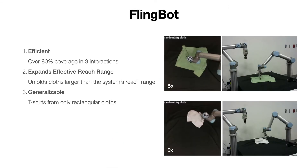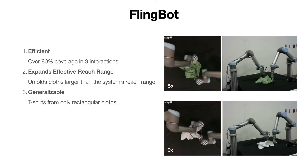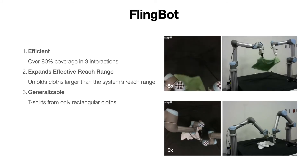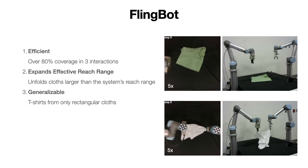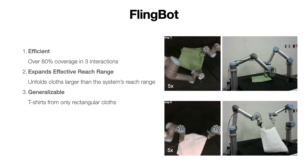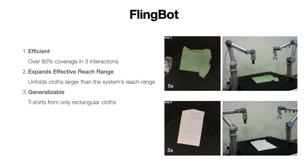We introduce FlingBot, a self-supervised algorithm which learns to unfold cloths with a pick, stretch, and fling primitive for a dual-arm setup. It achieves over 80% coverage in three steps, works on cloths that are larger than its reach range, and generalizes to t-shirts while being only trained on rectangular cloths.